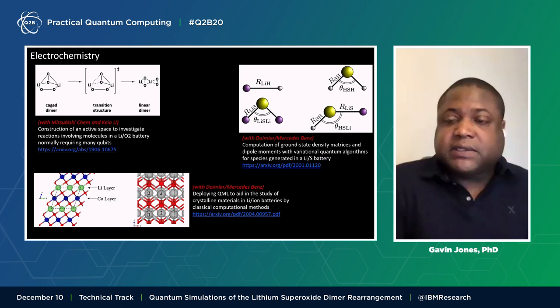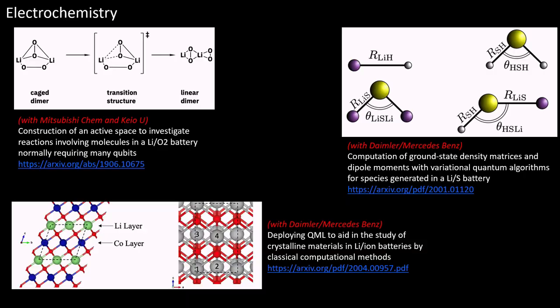Now I'll provide a brief overview of the types of investigations that IBM has undertaken with partners on electrochemical systems. We've collaborated with Mitsubishi Chemicals and Keio University to demonstrate the use of an active space to investigate the reaction mechanism for a rearrangement process that has been proposed to occur in lithium air batteries. In this case, we reduce the number of qubits required from 46 to just 2 by focusing on the active space for the reaction. And this is the focus of today's talk.